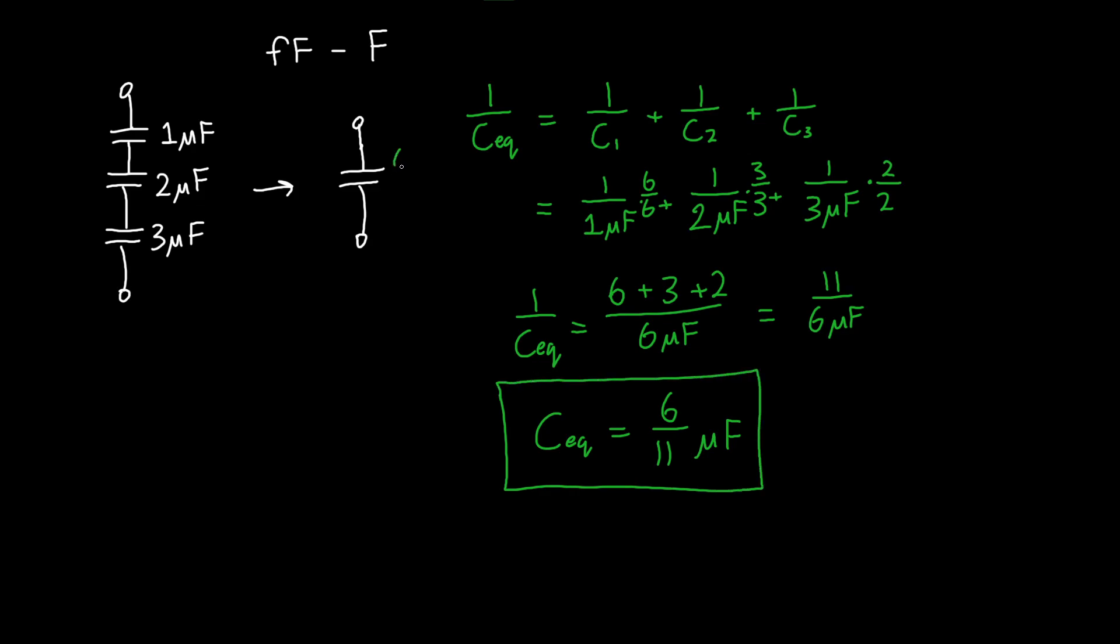So this capacitor has a value of six over 11 microfarads. Now, if you wanted to, when doing this calculation, you could recognize that since all the capacitors have the same units, you could just pull the microfarads out in front or behind and then deal directly with fractions. And that's a perfectly legitimate way to do this as well.